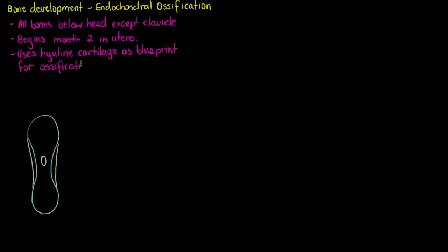Now that we know those key factors, let's take a step-by-step look at what's actually happening in the process. The first thing we're going to see is that the perichondrium — the outer layer of this cartilaginous tissue in the forming bone — is going to become vascularised, penetrated by tiny blood vessels that start delivering nutrients to that area.